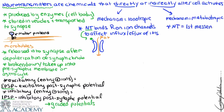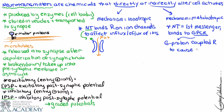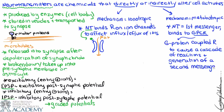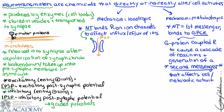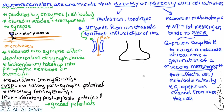In metabotropic mechanisms, a neurotransmitter functions as what's called a first messenger. It binds to a GPCR — a G protein-coupled receptor — to cause a cascade of reactions and generation of a second messenger that affects the cell and metabolic activities. As an example, it could be like opening an ion channel from the inside of the cell instead of the outside.